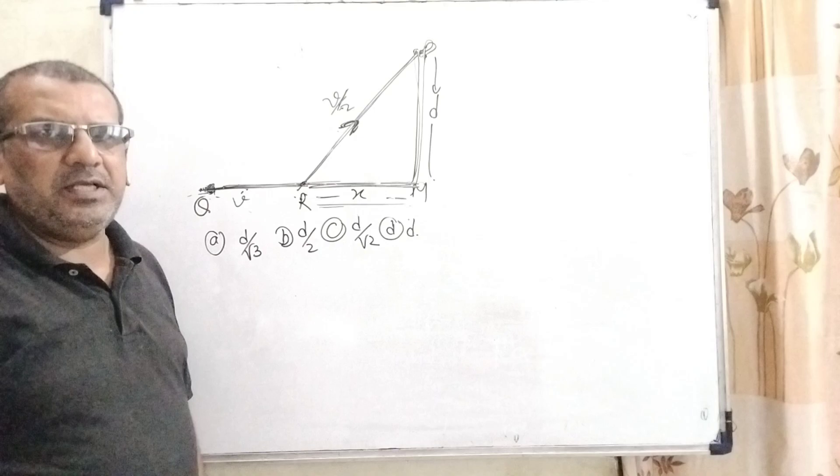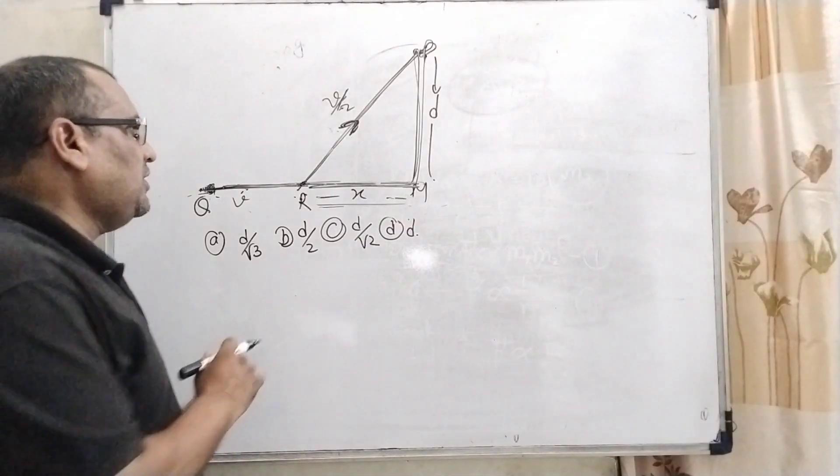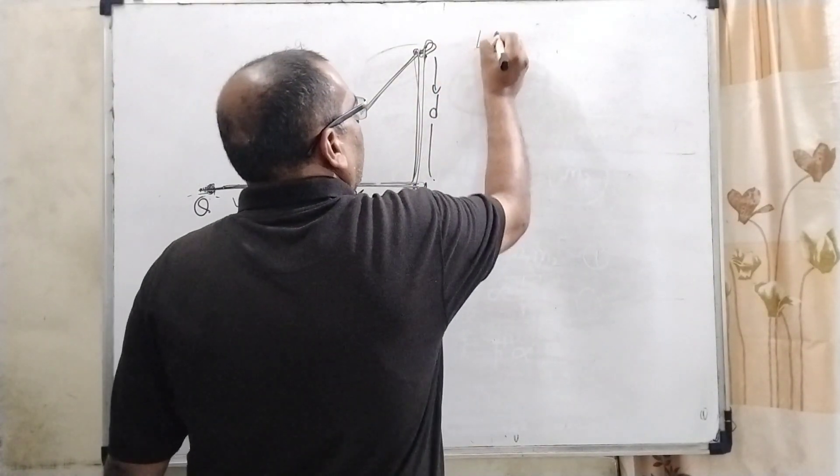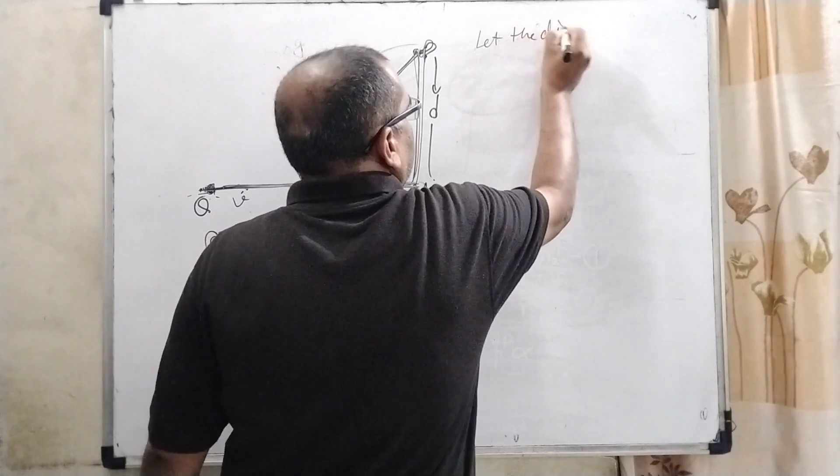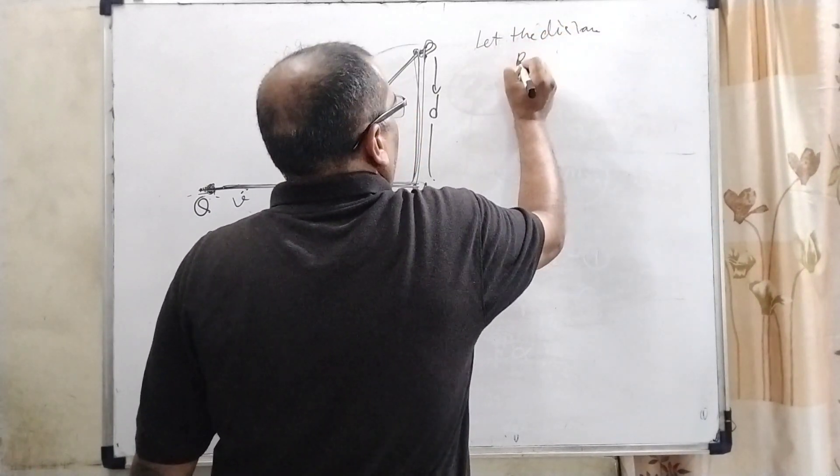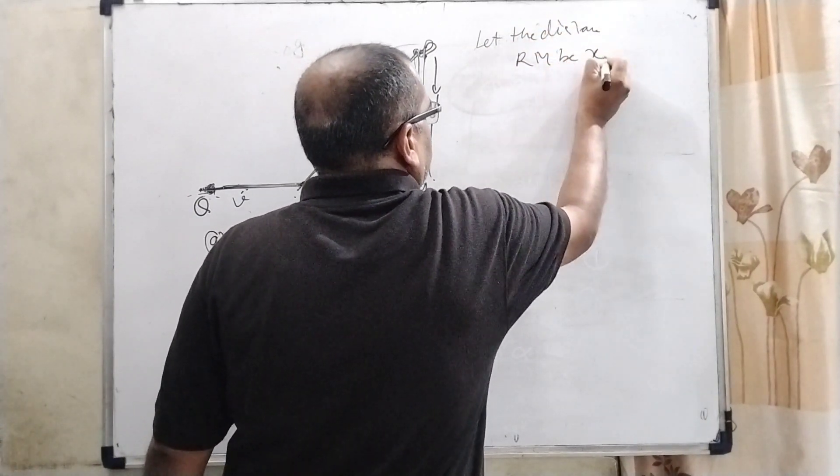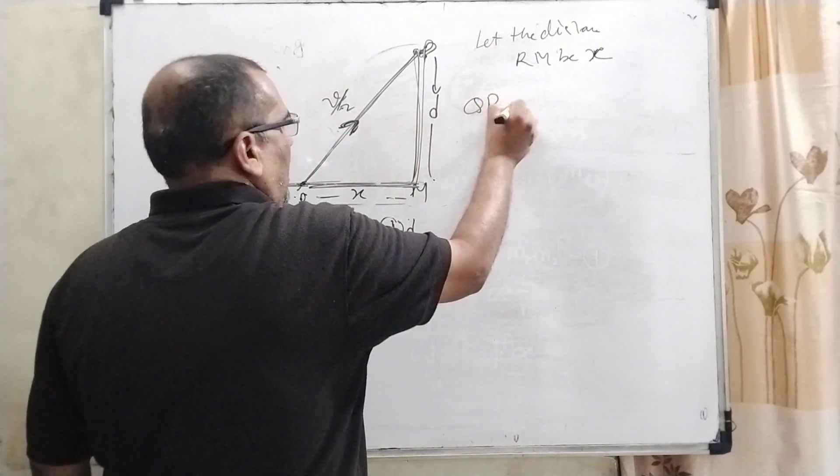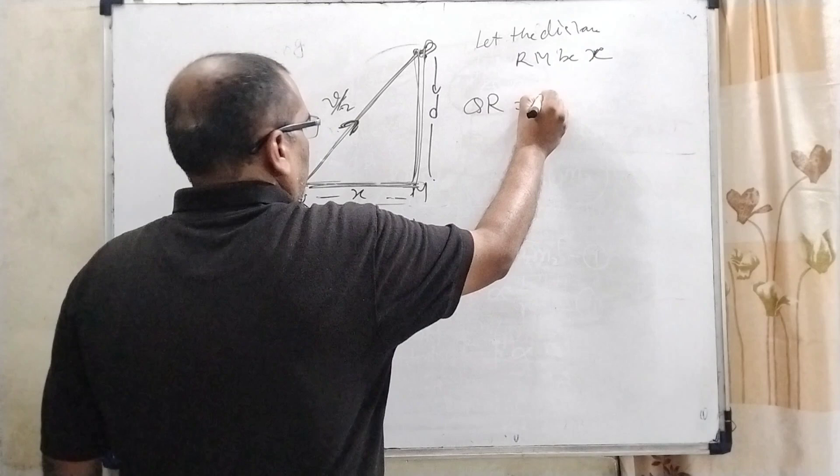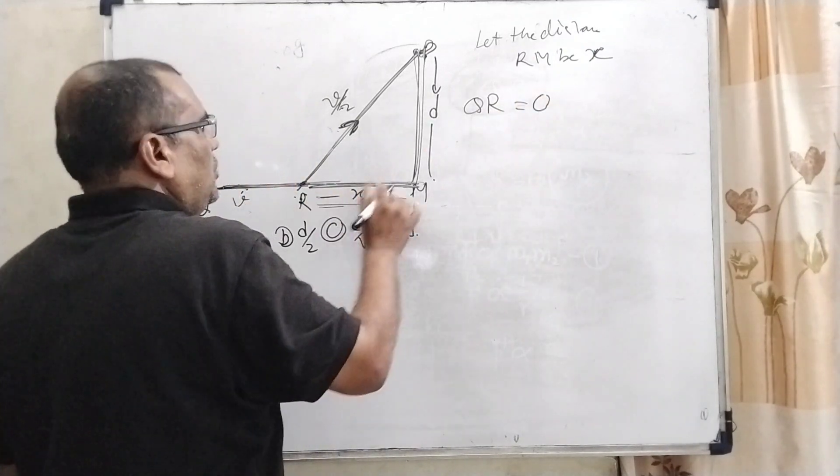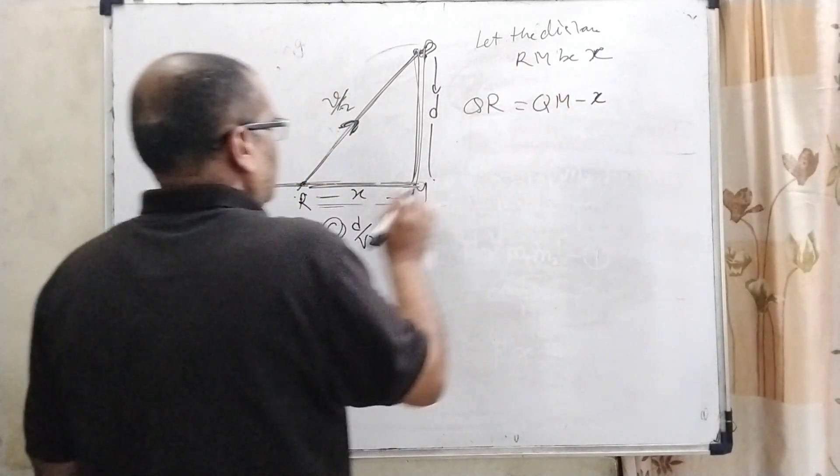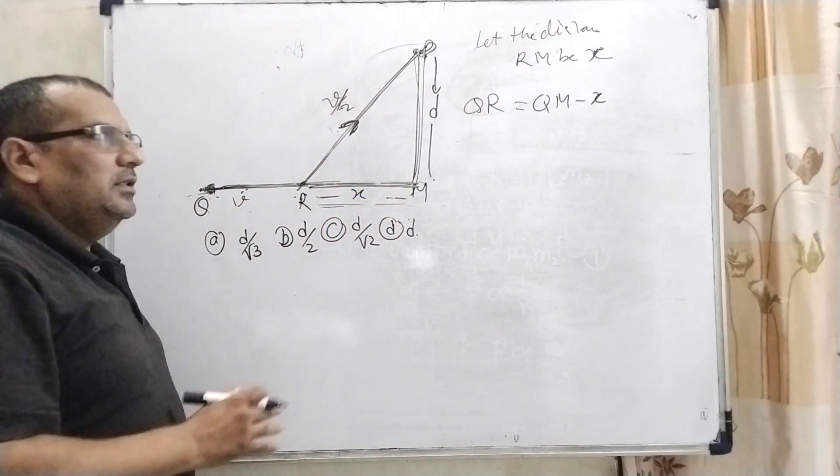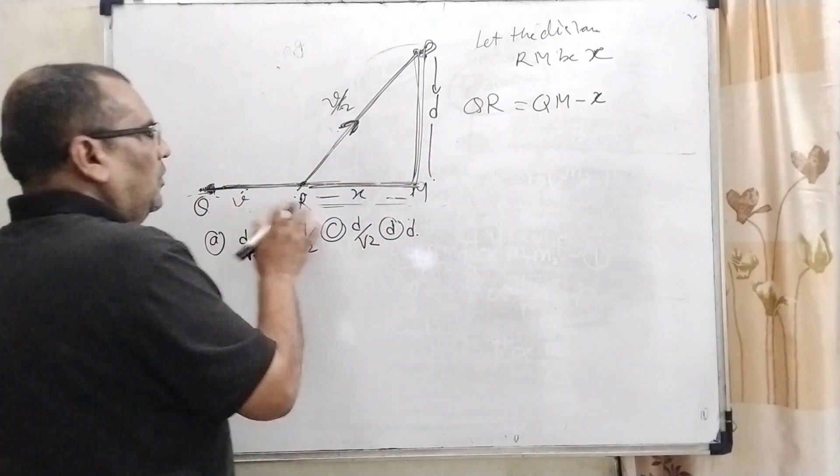So first of all, let us consider, let the distance RM be x. So now, remaining distance QR equals total distance QM minus x. That is QR.